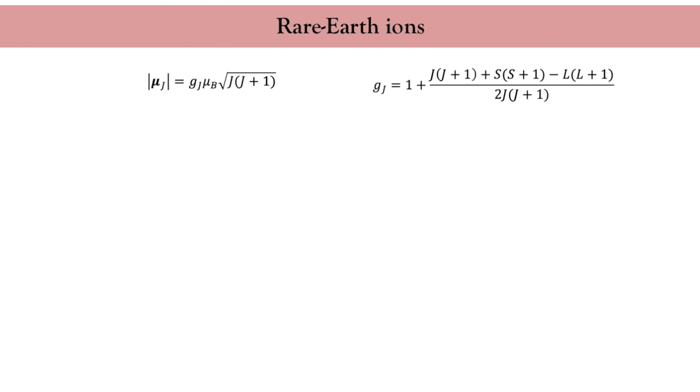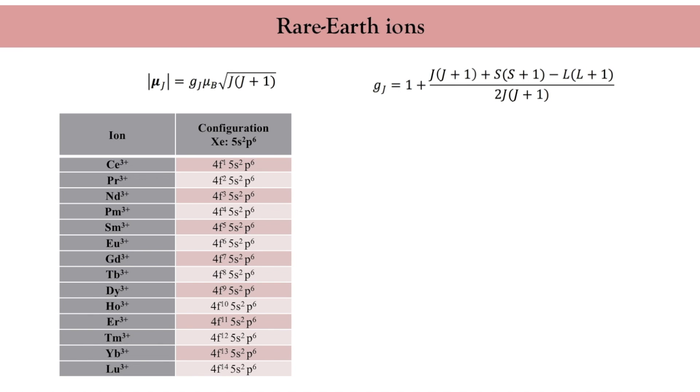Let's first look at the rare earth series. As we have seen previously, the magnetic moment of an atom is given by its total angular momentum j. More specifically, it is proportional to the square root of j times j plus 1. In the case of rare earth, the electronic configuration is based on the xenon configuration, so 2 electrons on 5s and 6 electrons on 5p. The additional electrons occupy the 4f orbitals.